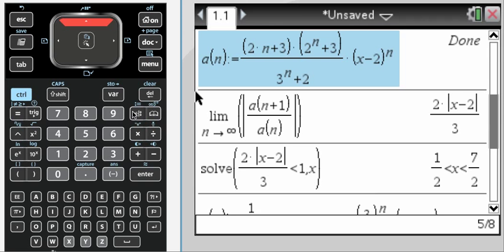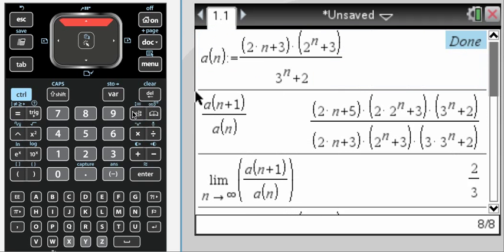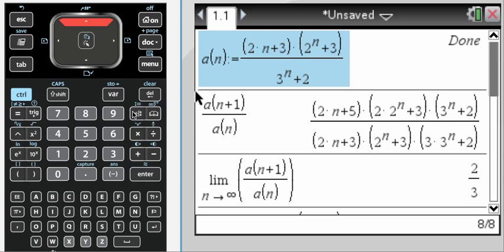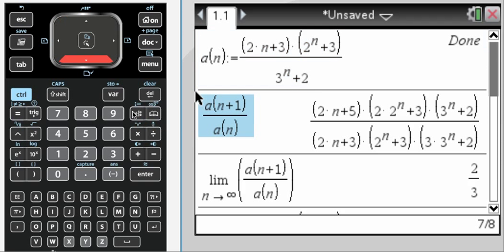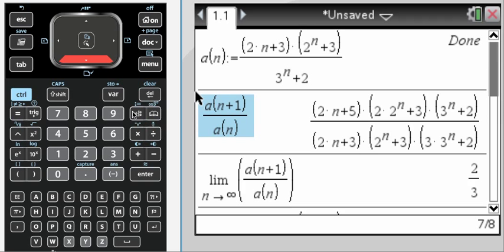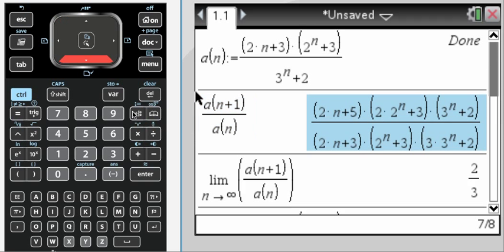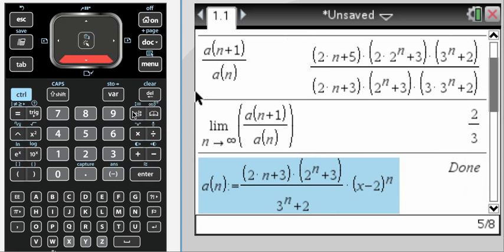But anyway, it allows you to quickly do the ratio test. So you define a sub n to be a function of n on your calculator, and then your calculator can actually handle finding a sub n plus 1 over a sub n, if you want it to. Or you can just have it do the limit for you.